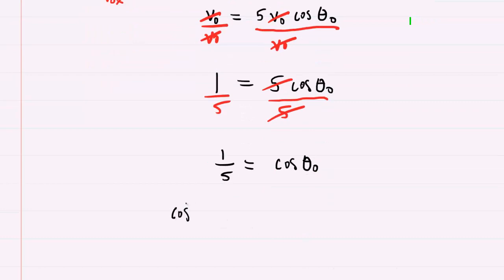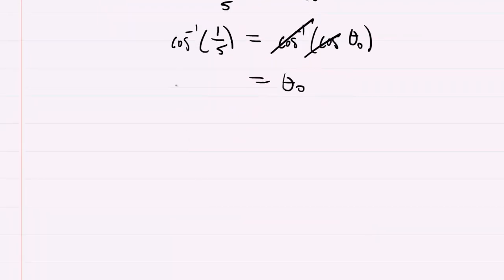Finally to solve for theta naught we take the inverse cosine on both sides of this equation. By doing that the inverse cos and the cos cancel. We're left with theta naught equals the inverse cosine of one fifth. You would punch that into your calculator so long as it was set on degree mode and that would leave you with 78.5 degrees equals theta naught. This would be the correct answer to the question.